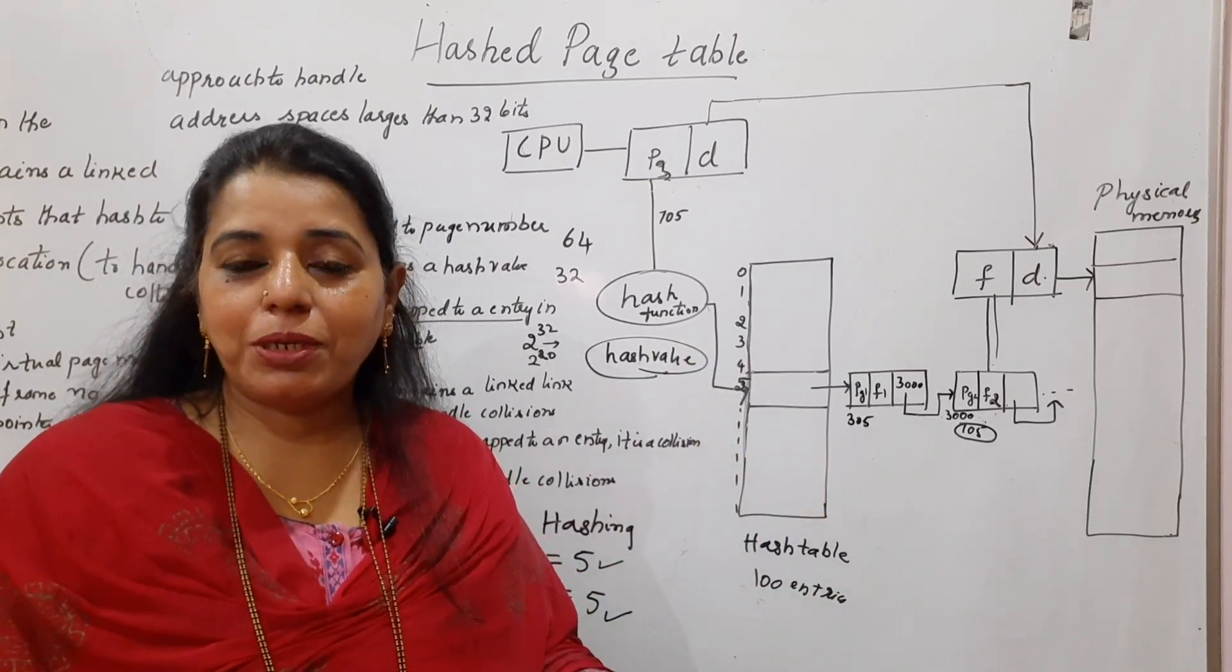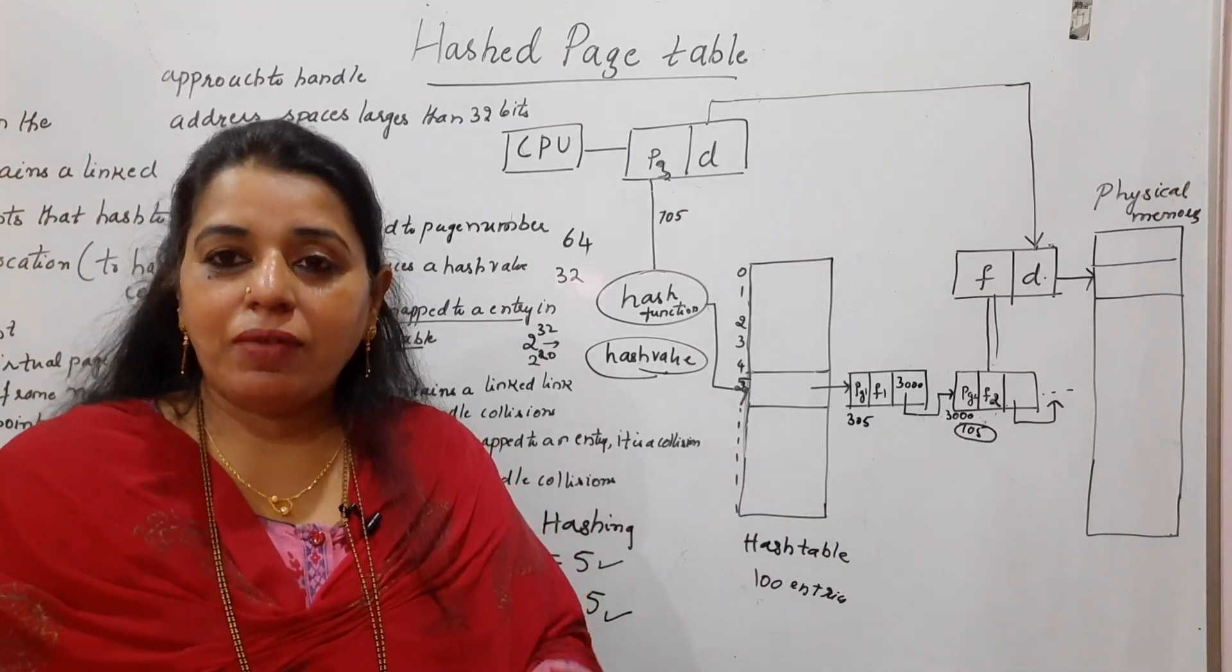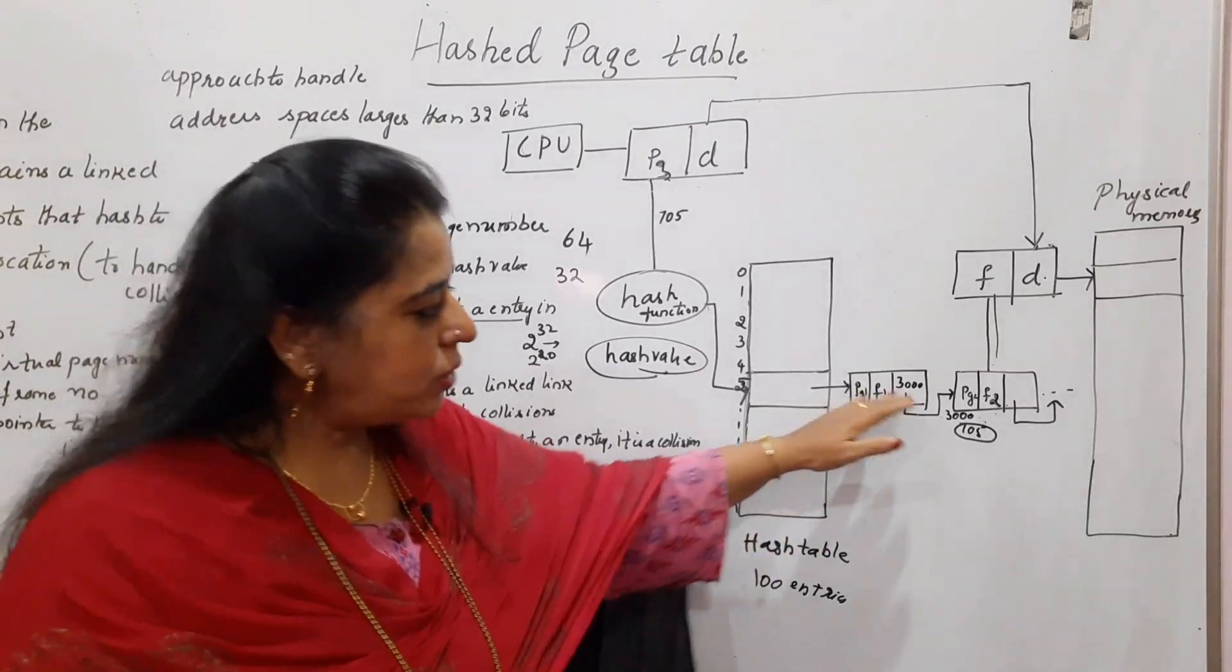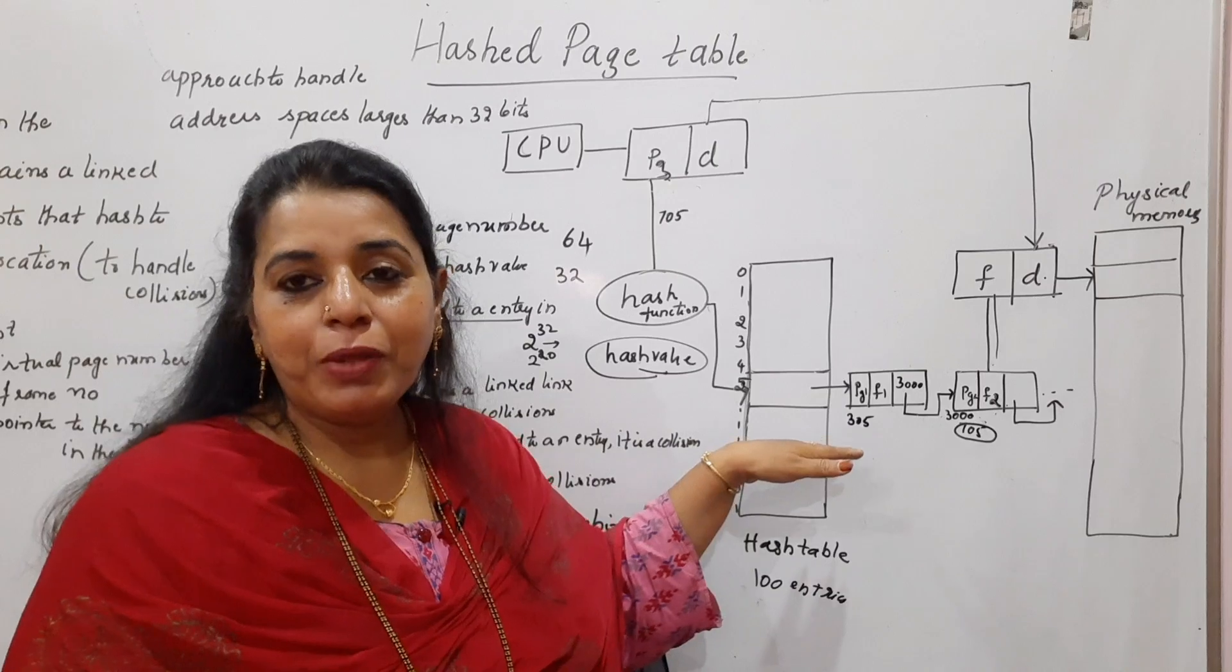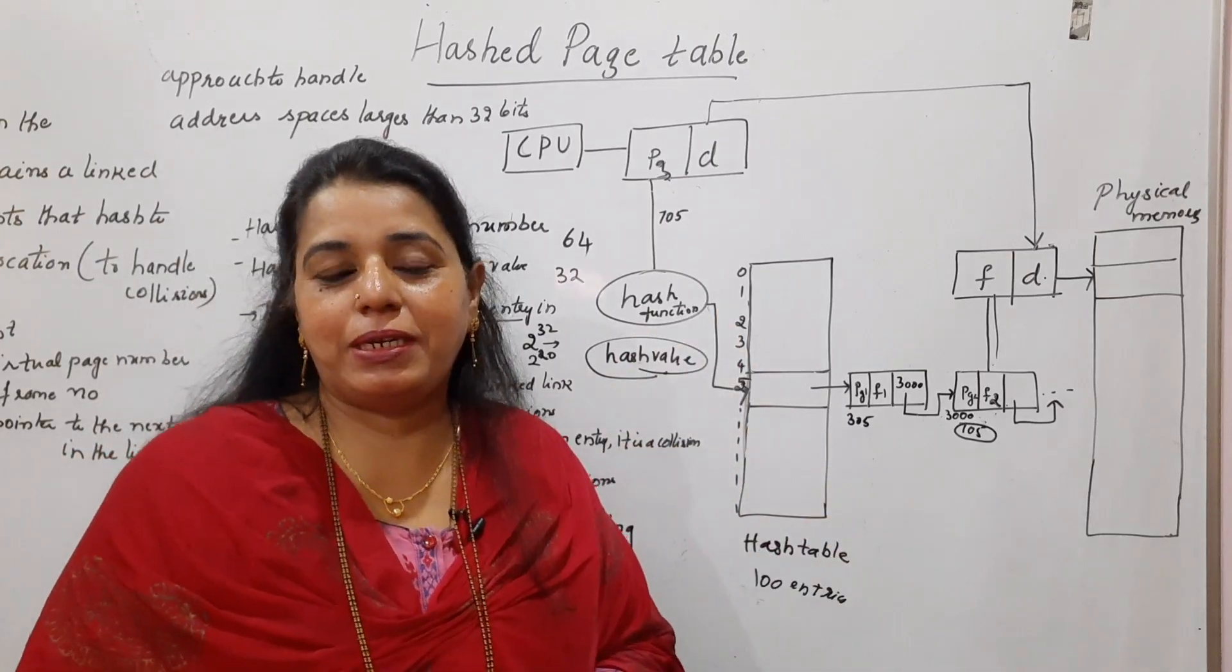And to store all the information about all the pages in one consecutive space is very difficult. It will not find such consecutive space. Hence, the reason will go for the hashing technique, wherein you can store multiple entries which are mapped to one particular hash value.